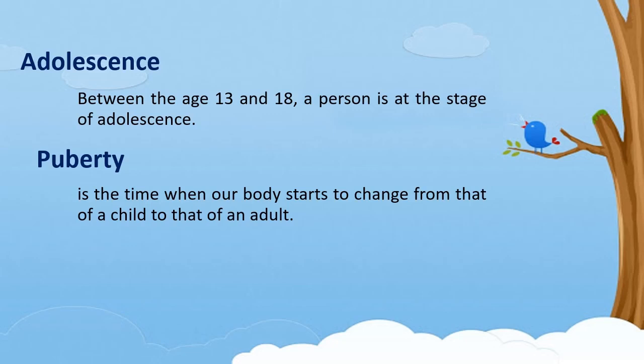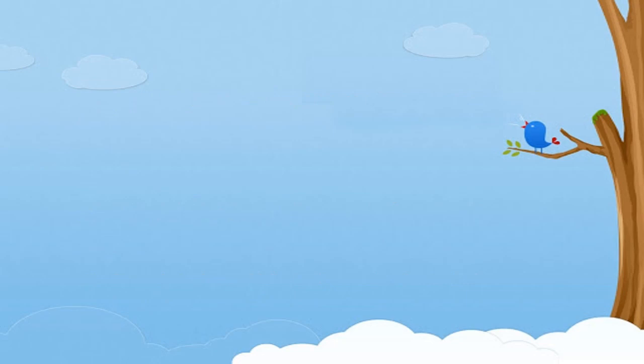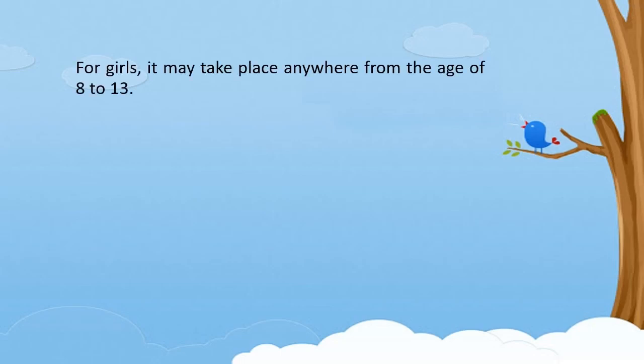When your body is ready to begin puberty, your pituitary gland releases special hormones. Hormones are chemicals in our body that control and regulate the activities of certain cells or organs. Depending on whether you are a boy or a girl, these hormones go to work on different parts of the body.